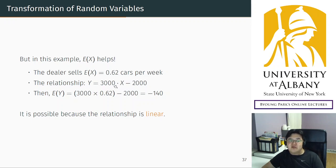Then, I told you to remember this number. You get the same result by calculating this way: simply apply the mean, apply the relationship to the mean. So plug this into X. 3000 times the mean minus 2000 is the expected net profit. This is an absolutely easier way to calculate the mean of the new random variable.